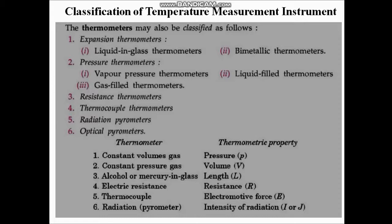Now we will see each type of thermometer one by one. Expansion thermometer has two types: liquid-in-glass thermometer and bimetallic thermometer. Pressure thermometer has three types: vapour pressure thermometer, liquid-filled thermometer, and gas-filled thermometer. The pressure thermometers are not in our syllabus but we will briefly see them. Electrical type thermometers include resistance, thermocouple, radiation, and optical pyrometer.